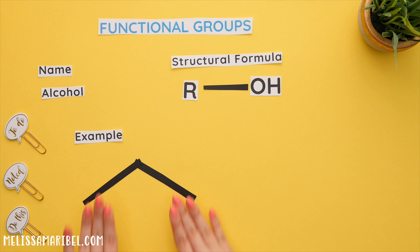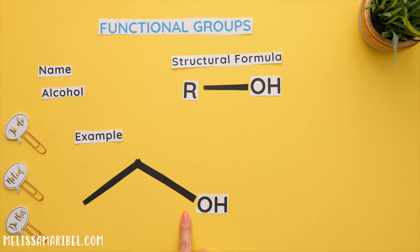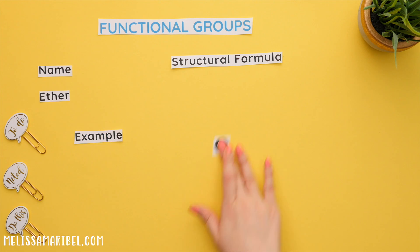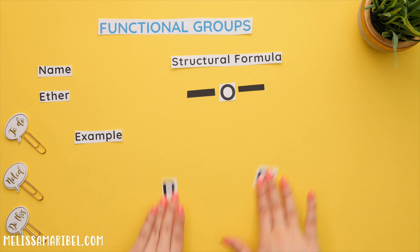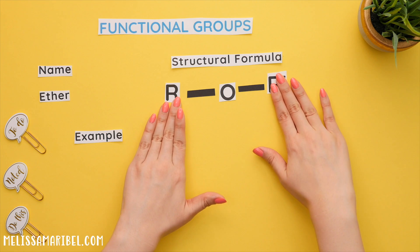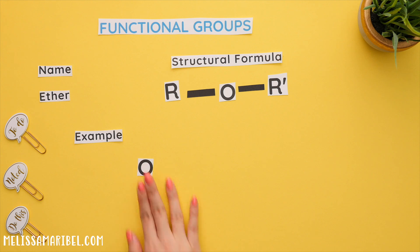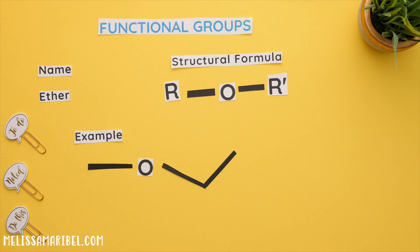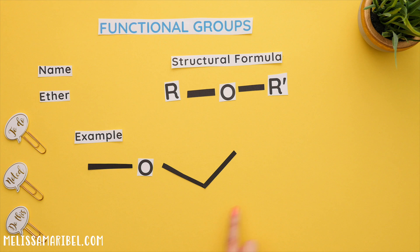Next is an alcohol, which has an OH bonded to a carbon chain or R group, meaning the rest of the molecule. An ether has an oxygen in the center and is surrounded by two R groups. The R groups can either be the same or different, shown by R prime. The apostrophe or prime means it's a different group.